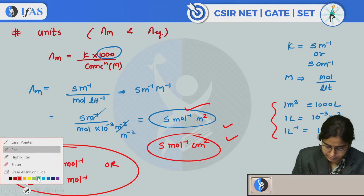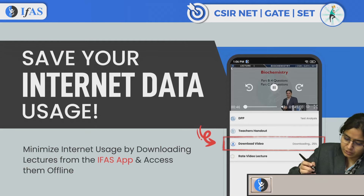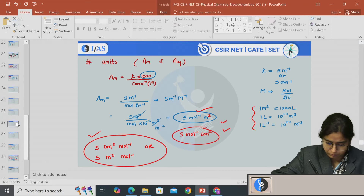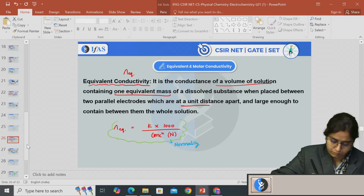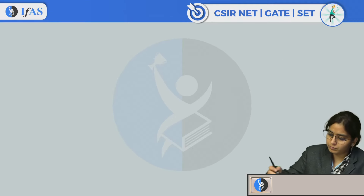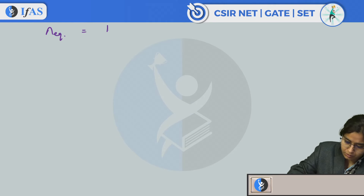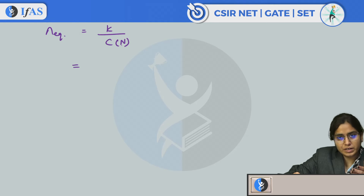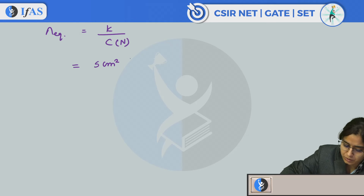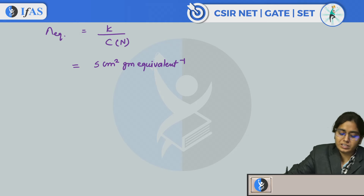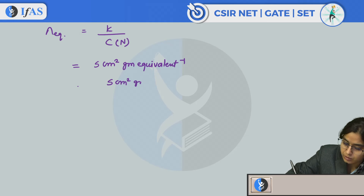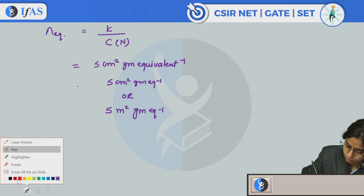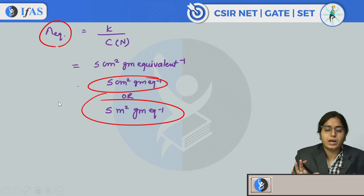For equivalent conductance, since normality is used instead of molarity, the units become: S·cm²·(gram equivalent)⁻¹ or S·m²·(gram equivalent)⁻¹. Also written as Ω⁻¹·cm²·(gram equivalent)⁻¹ or Ω⁻¹·m²·(gram equivalent)⁻¹. These units may be asked in the exam, so remember both forms.